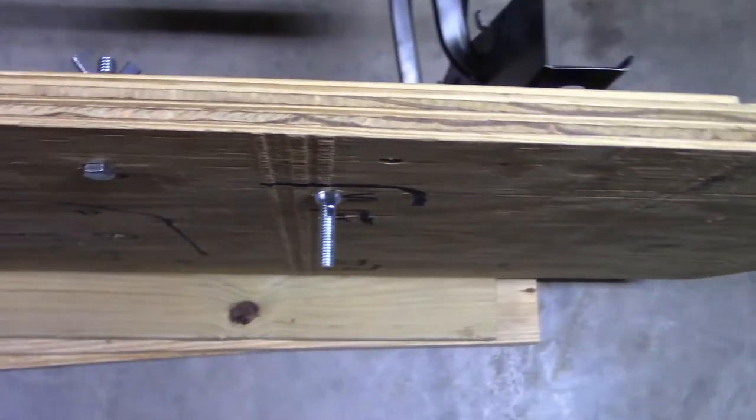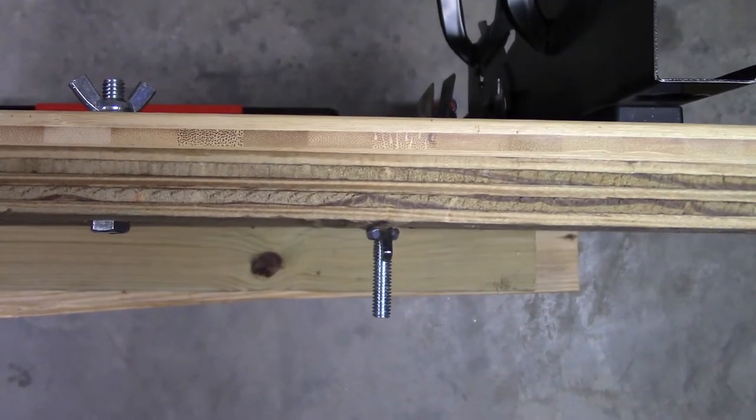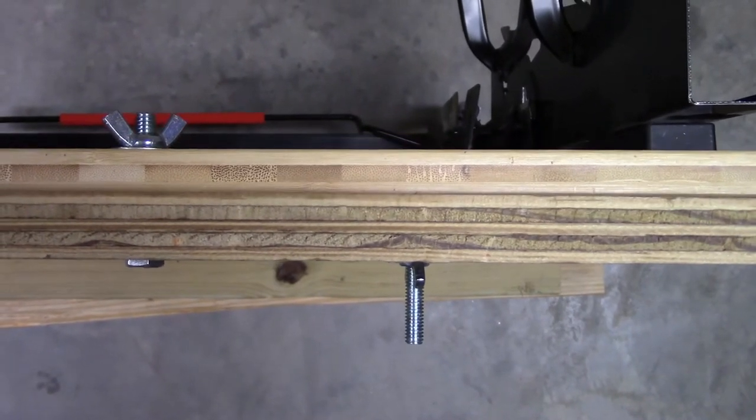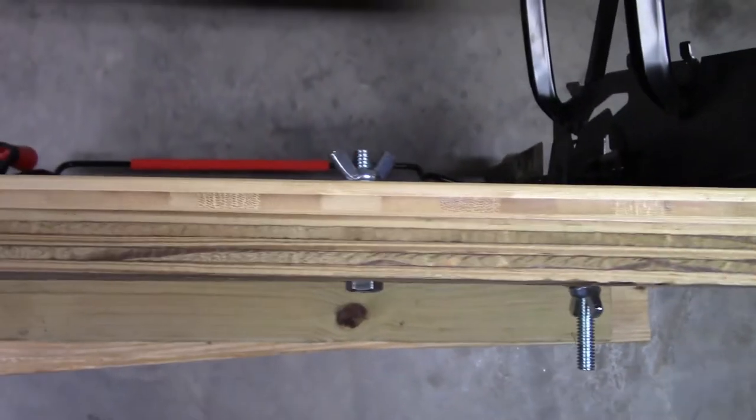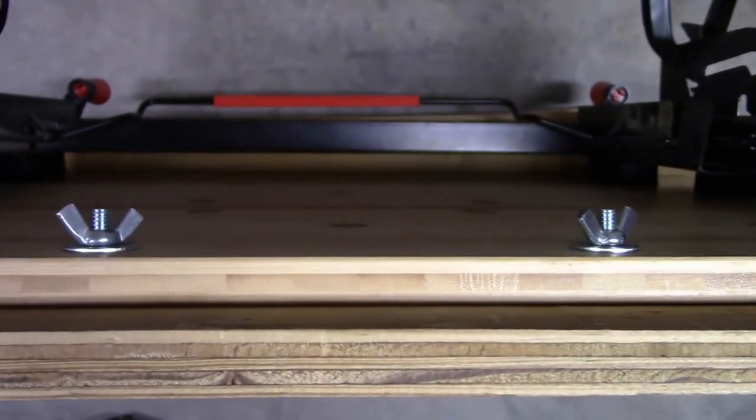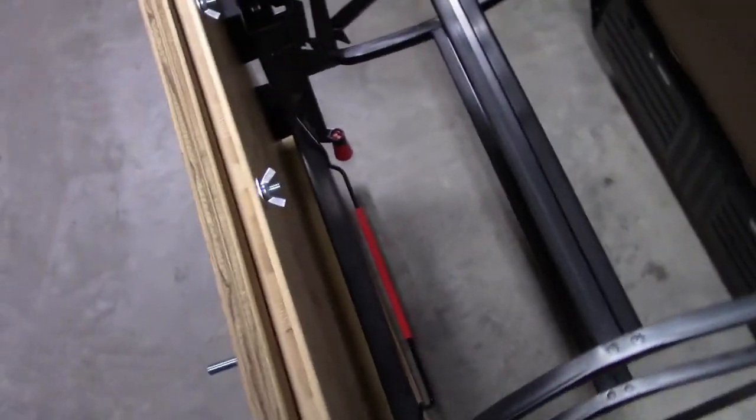Come up here, as you can see it's flush because I've countersunk that hole so the head is flush with the bottom side of this board. Whereas on these guys they do pass through and you can begin to see the washers and the wing nuts for both of those. Let's come around the other side and take a closer look.